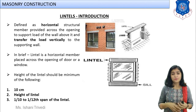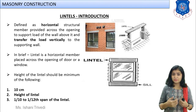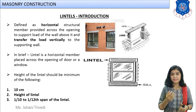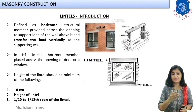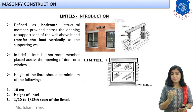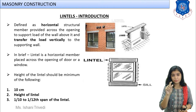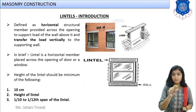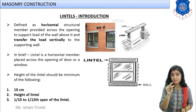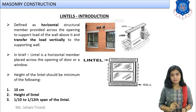You know where the plinth level, sill level, and lintel level are. Exactly at the lintel level, you have to provide a structural member. Looking at the image, you can see a window — a real-life image — and on top of the window a concrete slab is provided. The full construction appears to be brick masonry, and the horizontal concrete member provided on top of the window is known as the lintel.